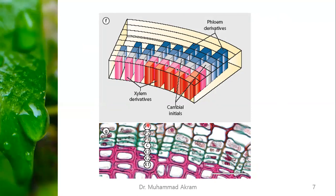The phloem has layers 1, 2, 3 and similarly xylem layers 1, 2, and 3. In this form, the girth of the stem increases.